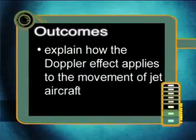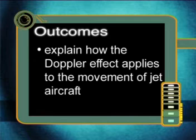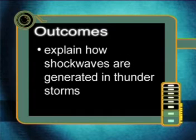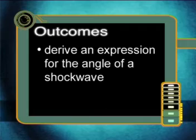In this lesson, you will learn about how the Doppler effect is used to explain the creation of shock waves formed by jet aircraft and in thunderstorms. You will also learn about the waves formed during earthquakes. By the end of this lesson, you should be able to explain how the Doppler effect applies to the movement of jet aircraft, interpret the speed of aircraft in terms of the Doppler effect, explain how shock waves are generated in thunderstorms, and derive an expression for the angle of a shock wave.